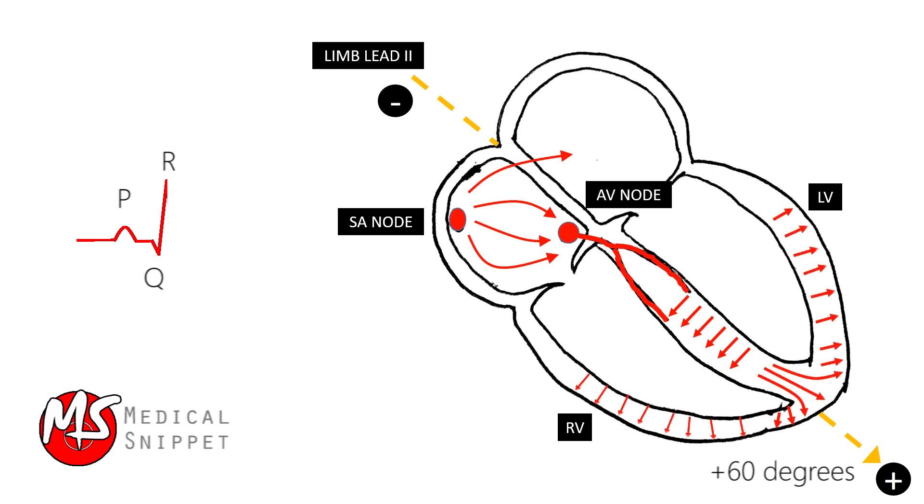Next, the free wall of the ventricles depolarizes from the endocardial to the epicardial surfaces. The mean vector is pointing toward the left arm, away from the positive electrode of lead 2, thus the ECG returns to baseline.